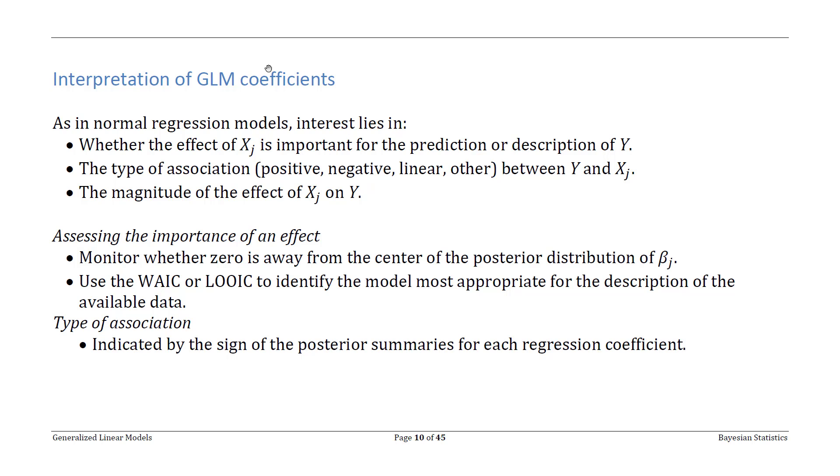So how do we answer these questions? Perhaps the first one here is assessing the importance of an effect, and there's really two main approaches you can use to answer this question. Perhaps the simplest is simply to assess whether the center of your posterior distribution for your regression coefficient is far away from zero. Or maybe another way of saying this is if you constructed a, say,